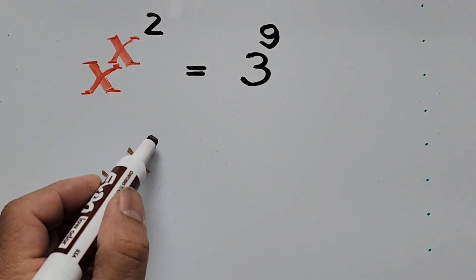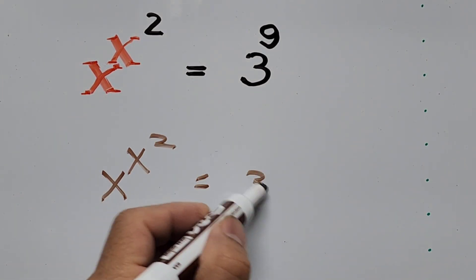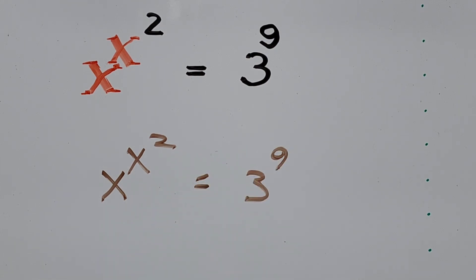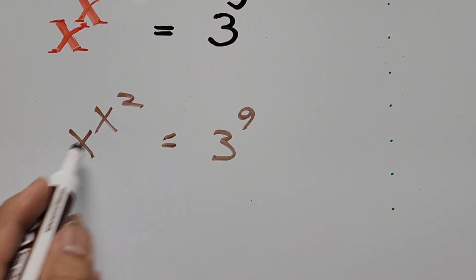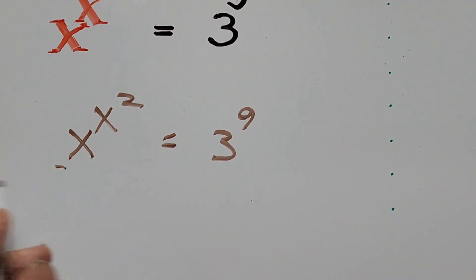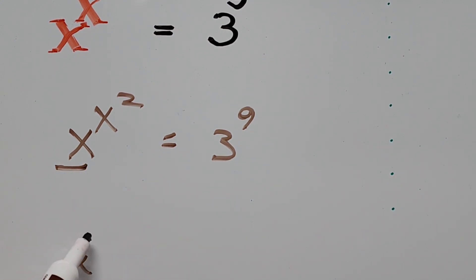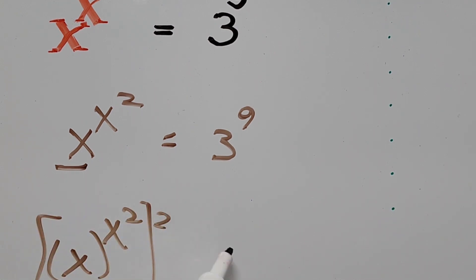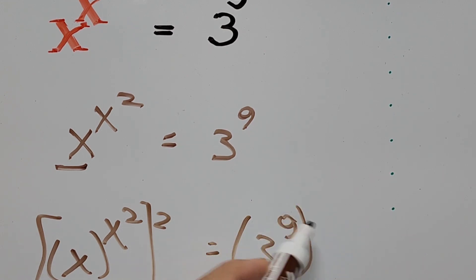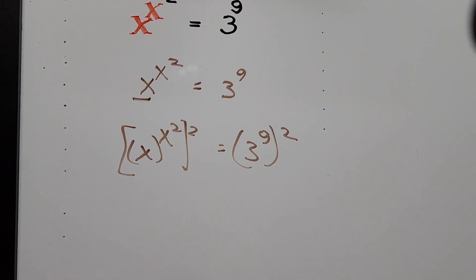Starting from x to the power of x squared equals 3 to the power of 9, our first step is raising both sides to the power of 2 to make the exponent reflect the same way as the base on the left side. That gives us x to the power of x squared, all squared, equals 3 to the power of 9, also squared.